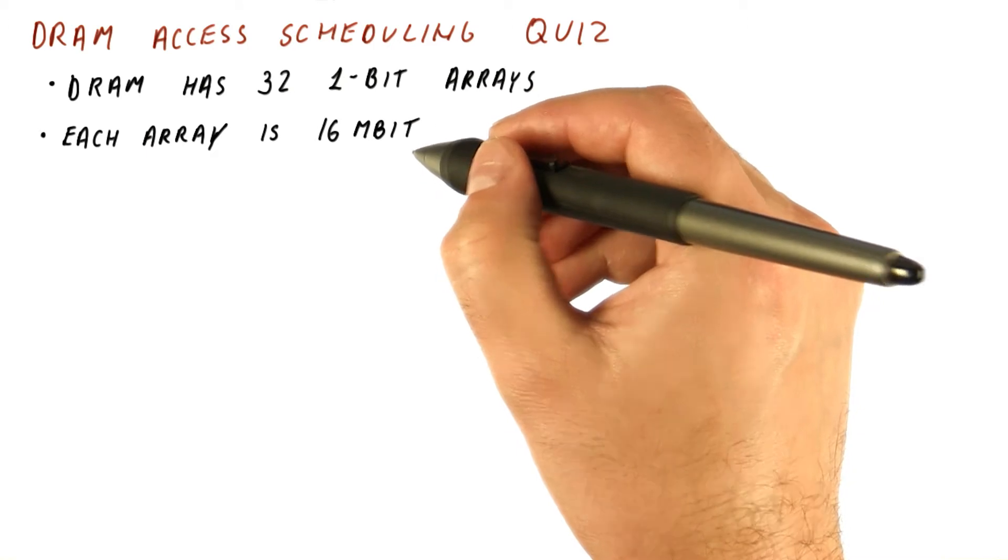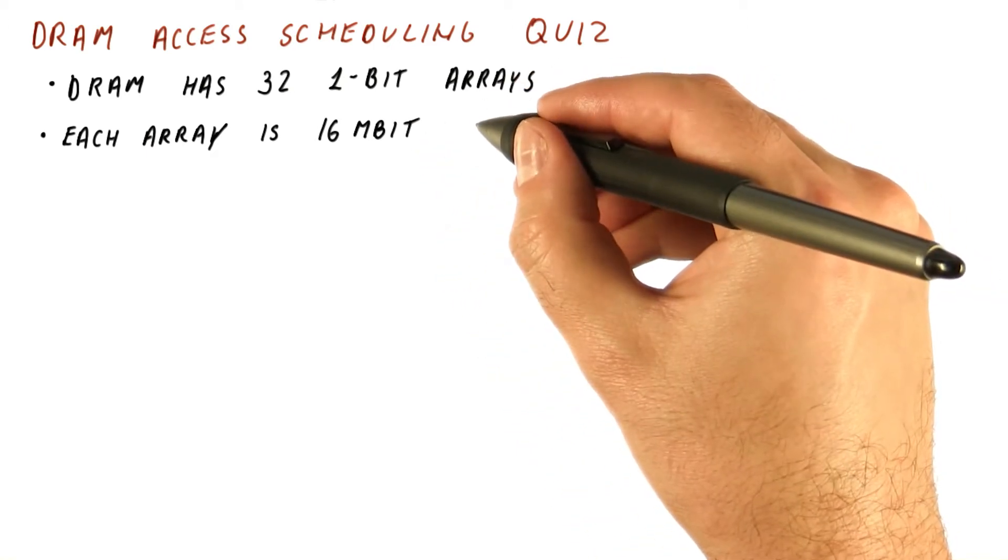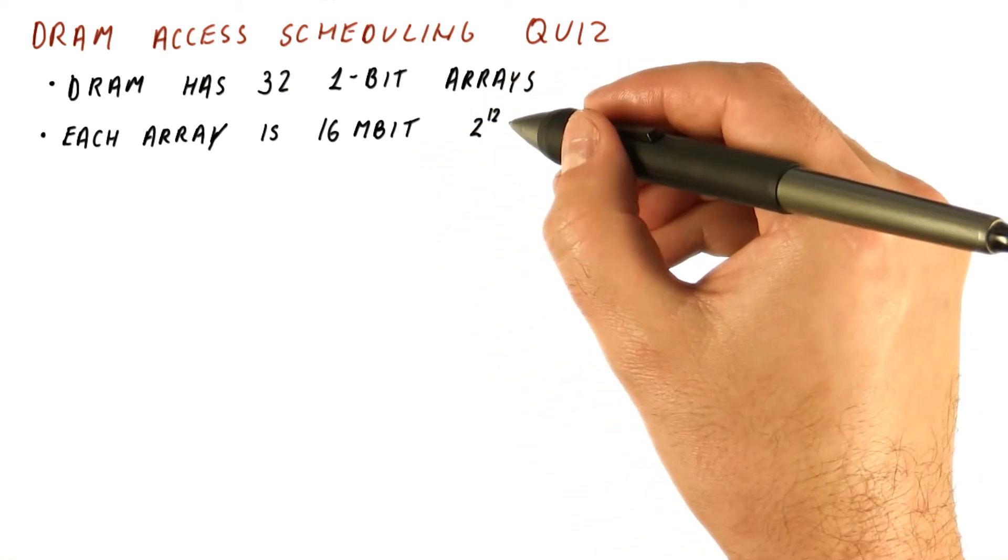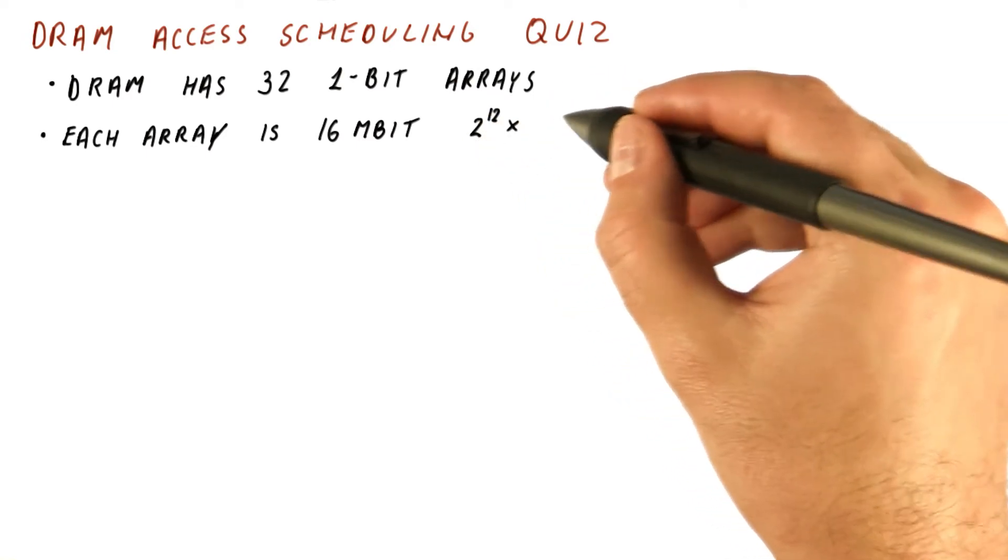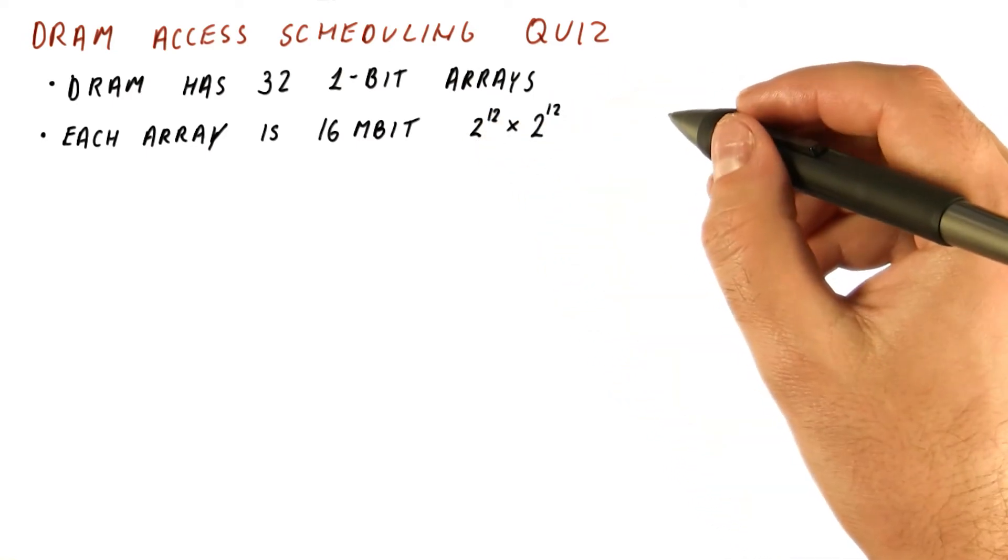Each array is a 16 megabit array organized as two to the twelfth rows, which is 4096 rows, times two to the twelfth bits per row.